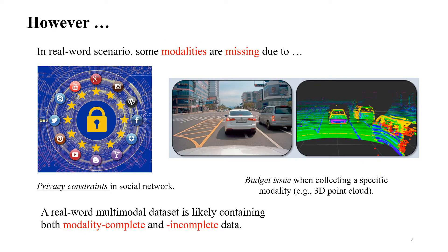However, in real-world scenarios, modality complete data are not always available due to all kinds of reasons. One reason could be privacy constraints — in social networks, we are likely not able to access modality-complete data because of privacy constraints applied by users. Another reason could be budget issues: if your budget is limited, 3D point cloud data is hard to obtain because LiDAR is quite expensive. So we believe a real-world multimodal dataset likely contains both modality complete and incomplete data.